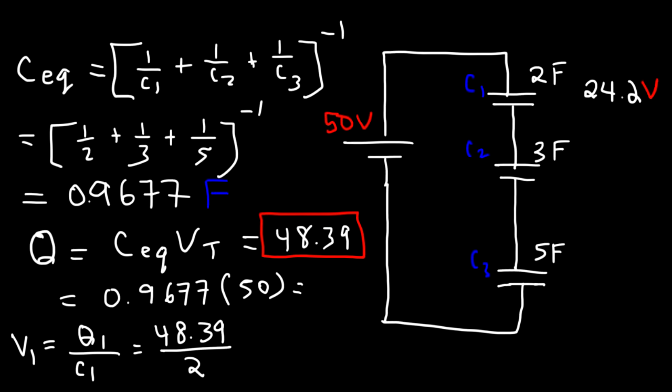Now, to find the voltage across C2, it's going to be Q2 divided by C2. Q1 and Q2, they're both equal to Q. So it's going to be 48.39 divided by 3, and then that is equal to 16.1.